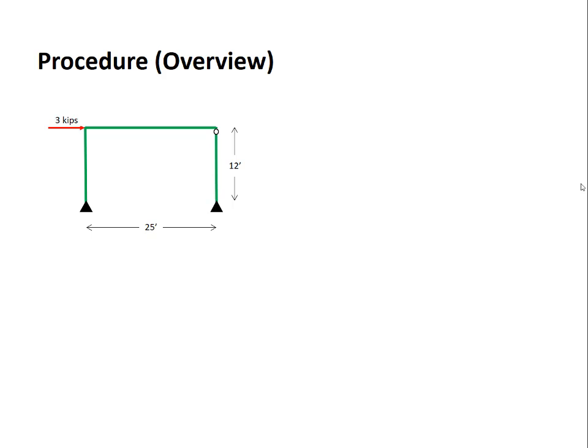This is a four step procedure. Step number one, solve for all the reactions and all the forces at the hinges. If we do that we obtain the following free body diagram. Once again this overview will be qualitative so we won't have any numbers involved.